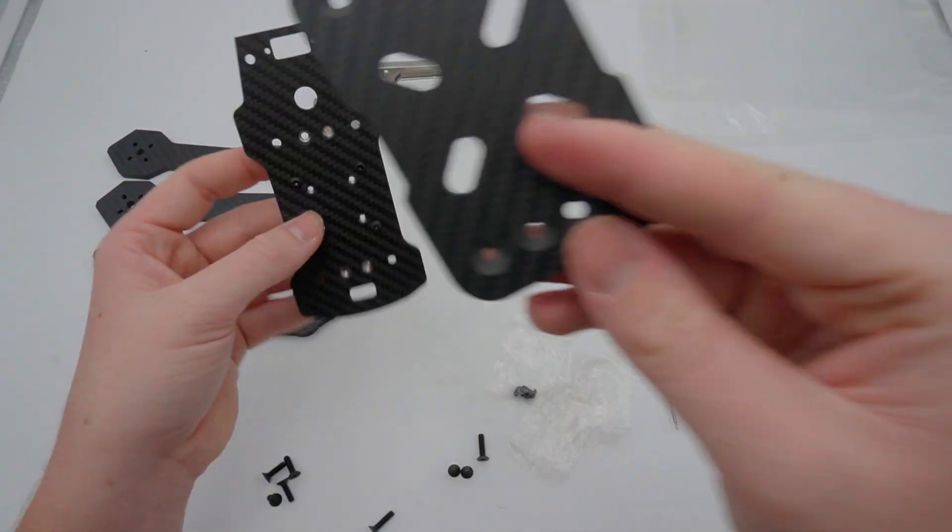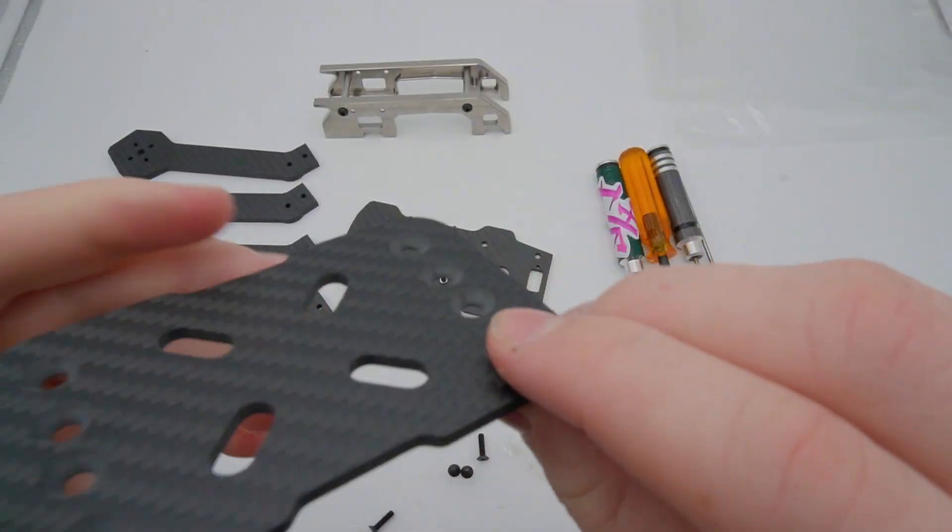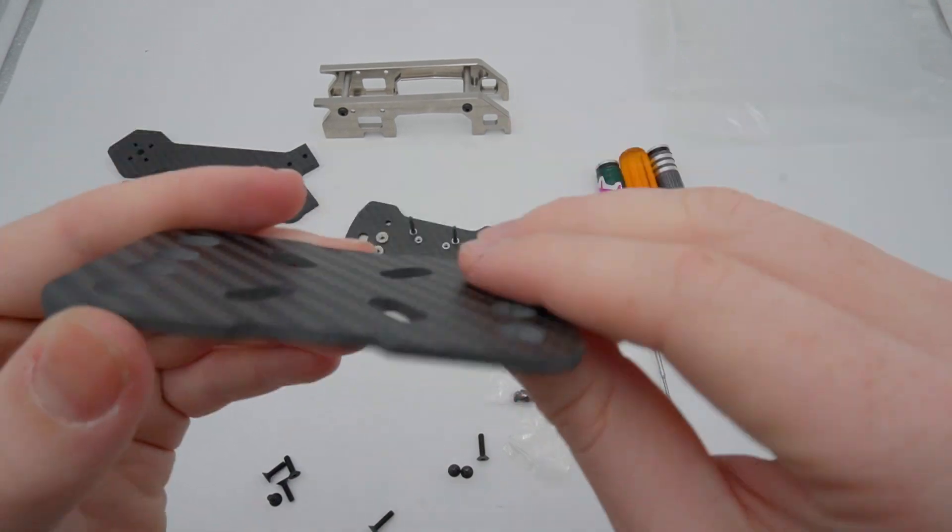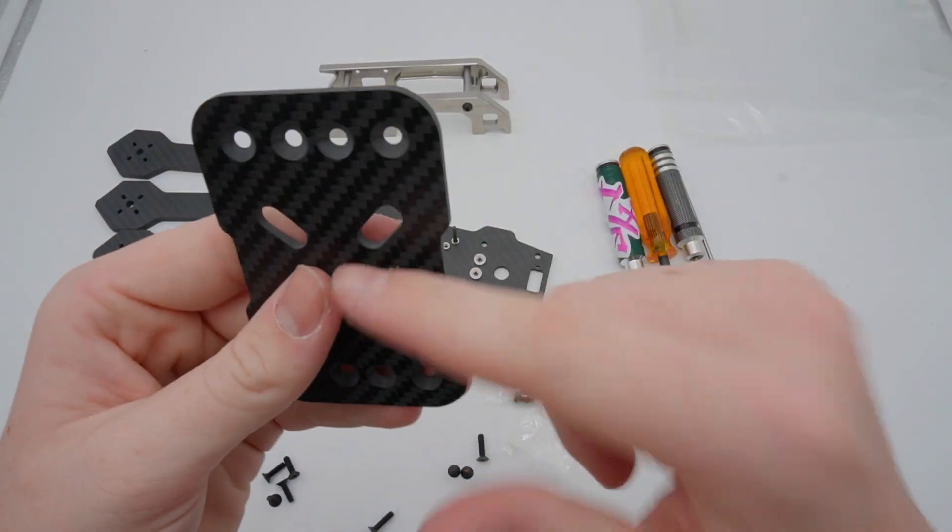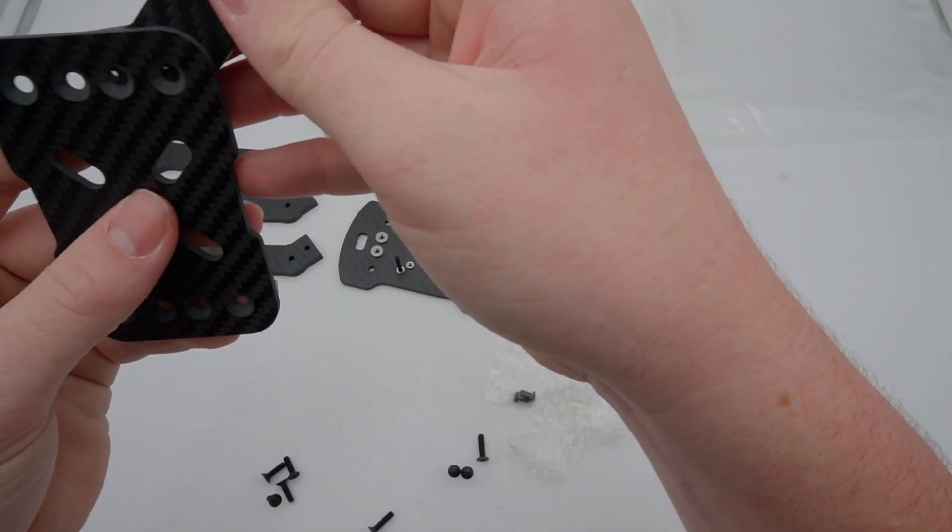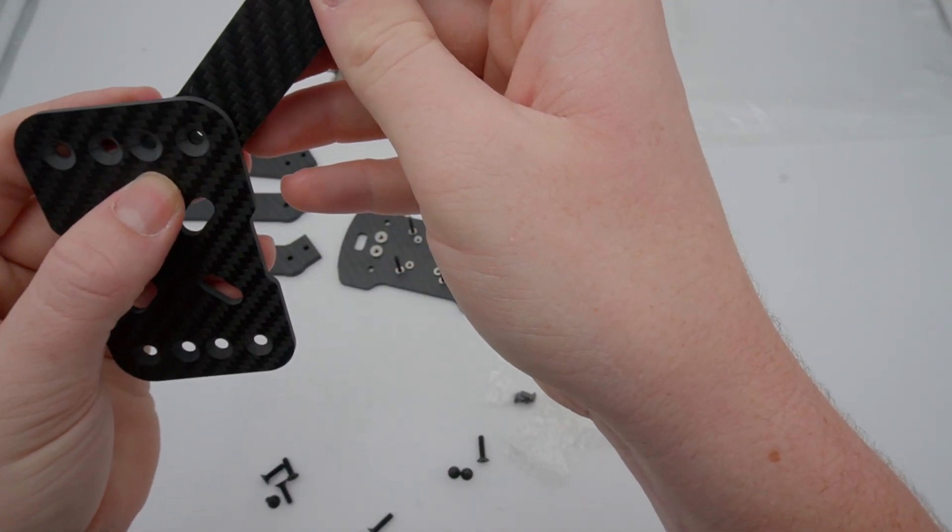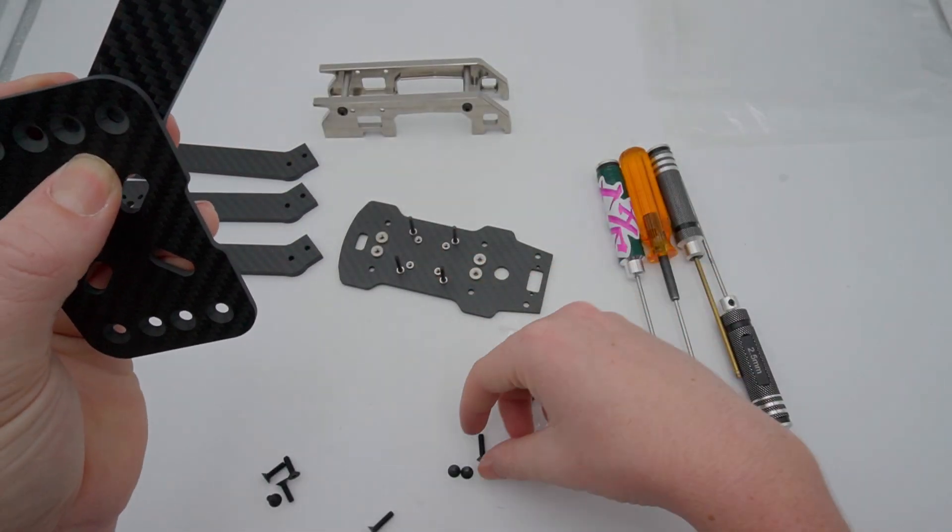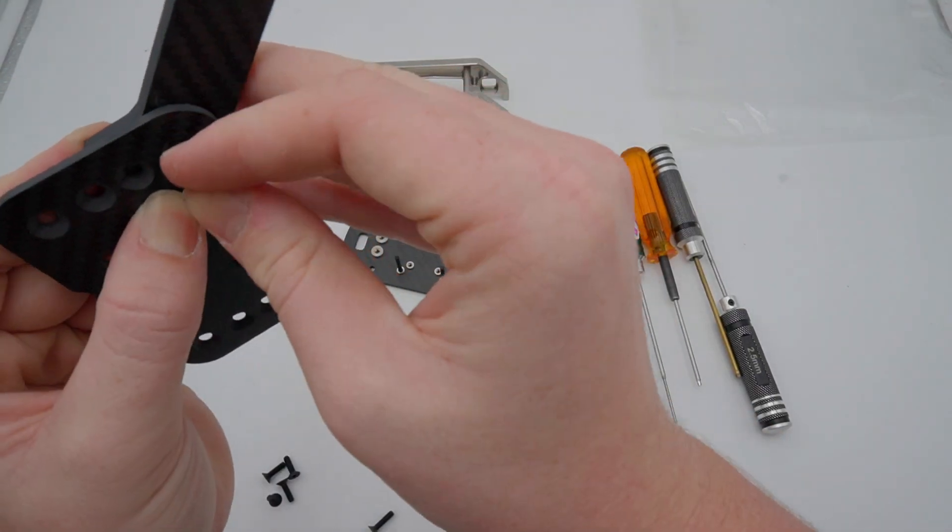So you can also go ahead and get your bottom plate. And this is going to be countersunk. So countersunk means that it's got this little divot right here. So you're going to take the countersunk side and hold it like this facing towards you. You're going to get one of your arms, place it in the back like this. So the countersunk side is still facing you.